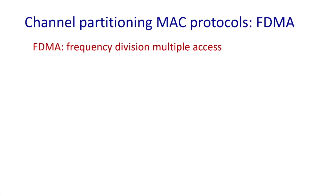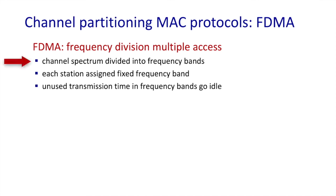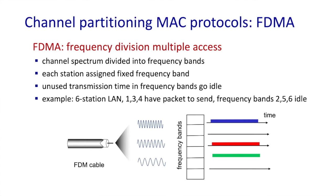Frequency division multiple access, or FDMA, is similar to TDMA, except now the entire frequency band is divided into subbands, and each node is allocated one or more subbands. If a frequency subband is unassigned, or a node has nothing to send but has an assigned subband, then that subband is going to go idle. In this example, nodes 1, 3, and 4 have packets to send and send them on their frequency bands, while frequency bands 2, 5, and 6 go idle.